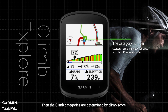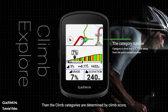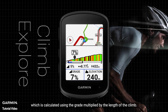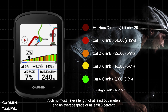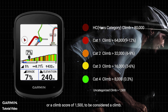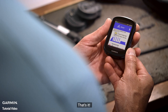The climb categories are determined by the climb score, which is calculated using the grade multiplied by the length of the climb. A climb must have a length of at least 500 meters and an average grade of at least 3%, or a climb score of 1500, to be considered a climb.